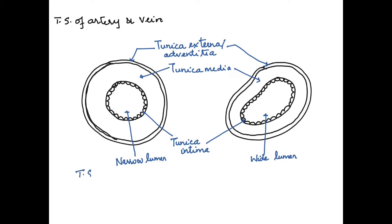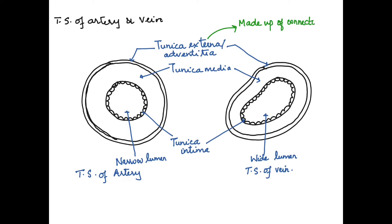So these are the structural differences we can see in the cross-section of an artery and a vein. Structural differences include the size of the tunica media — which is much thicker in the artery and thinner in the vein — and the lumen, which is narrow in the artery and wide in the vein.